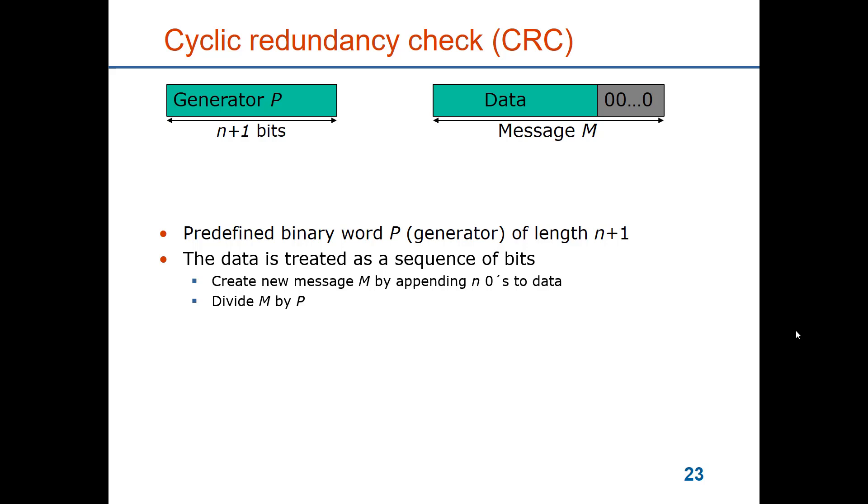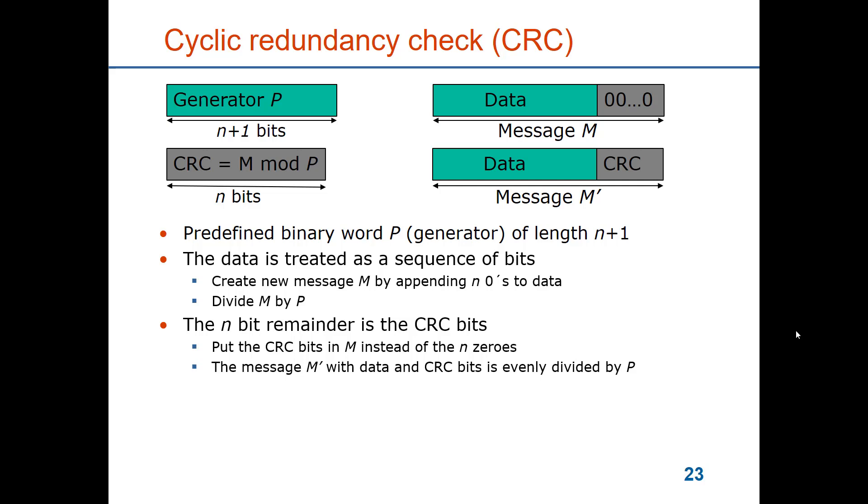You take the data and then you create the message by appending n zeros to the data for the message. So n is one bit less than the generator. And then you divide the message m by the generator p, and then you take the remainder of that computation. That remainder will have n bits. Those are the n bits that you append to the data as the extra information that will allow the receiver to check whether the message has been correctly received.